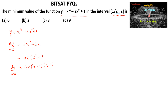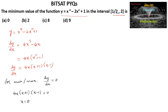For minimum or maximum, we set dy/dx = 0. So 4x(x + 1)(x - 1) = 0, giving either x = 0, x + 1 = 0, or x - 1 = 0. That is, x = 0, x = -1, and x = 1.